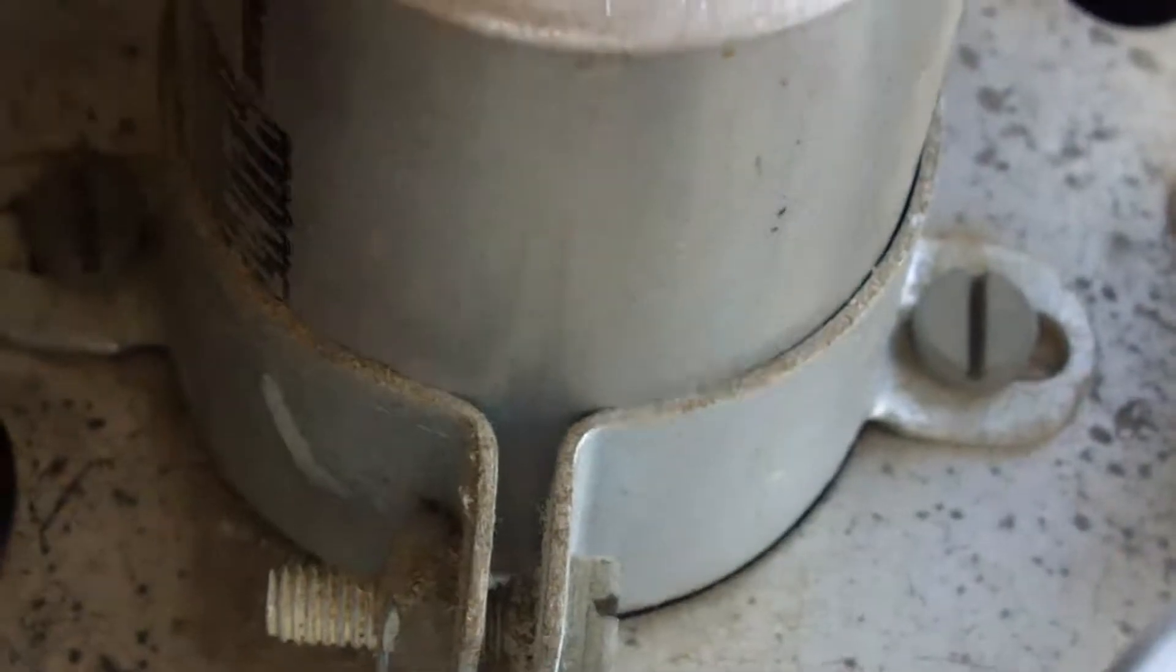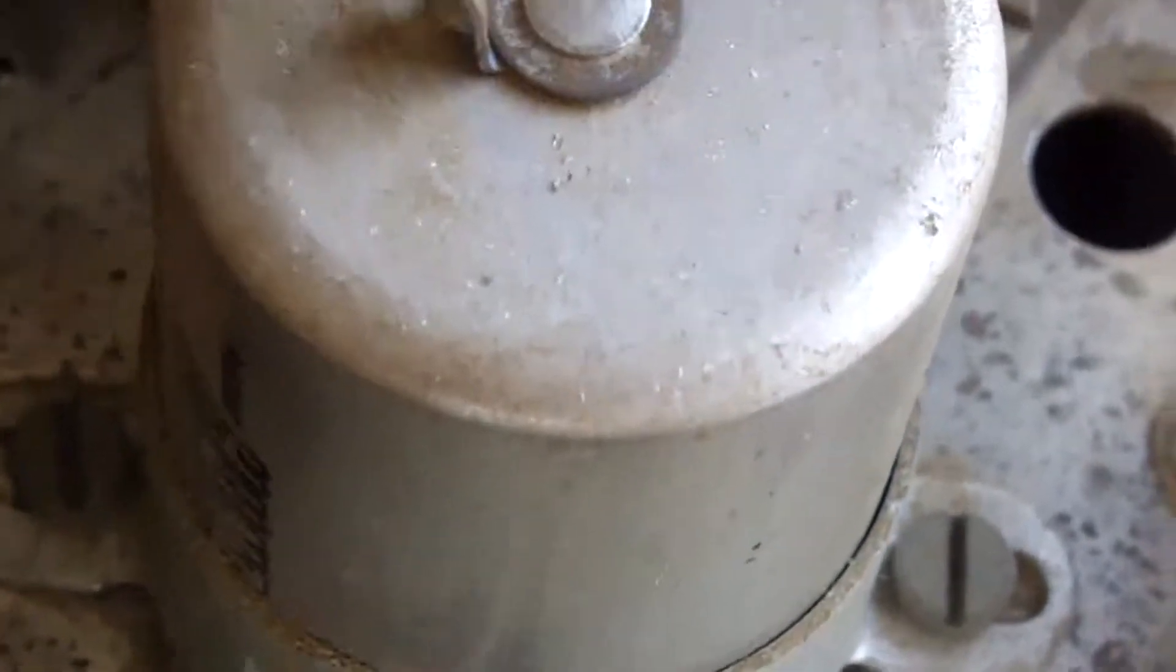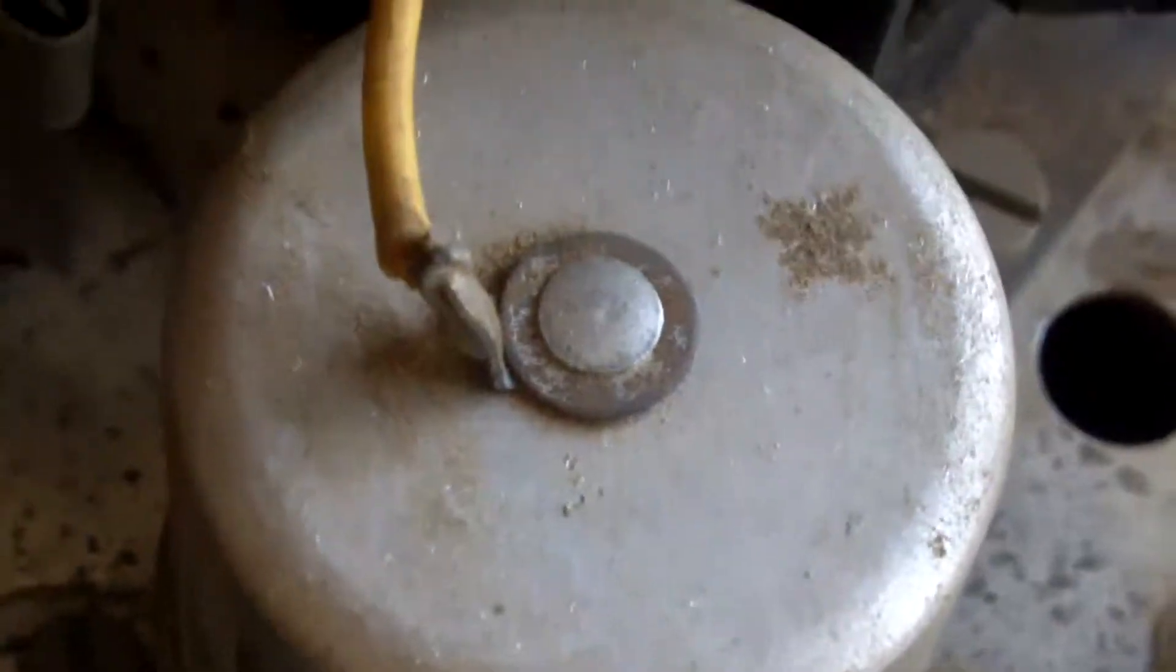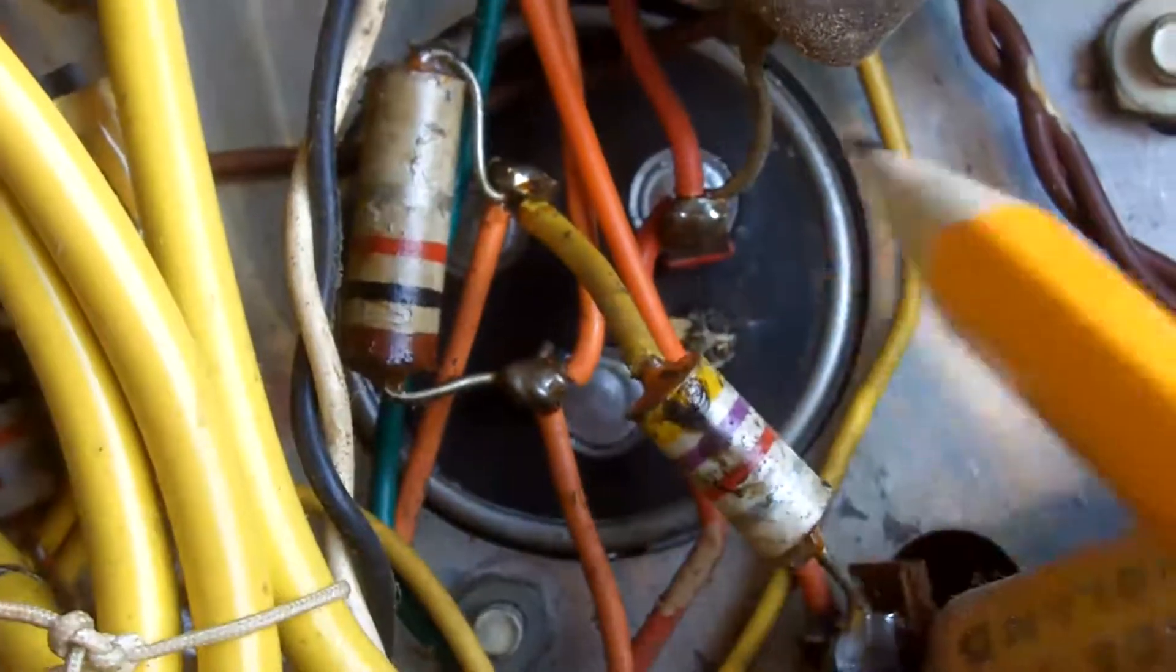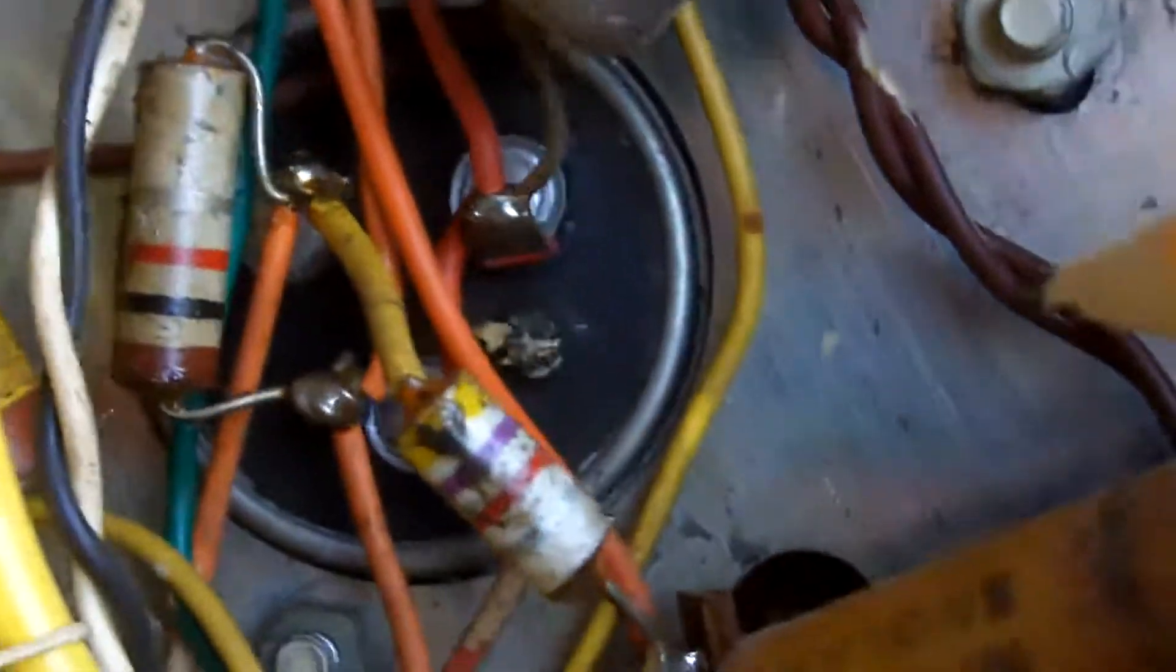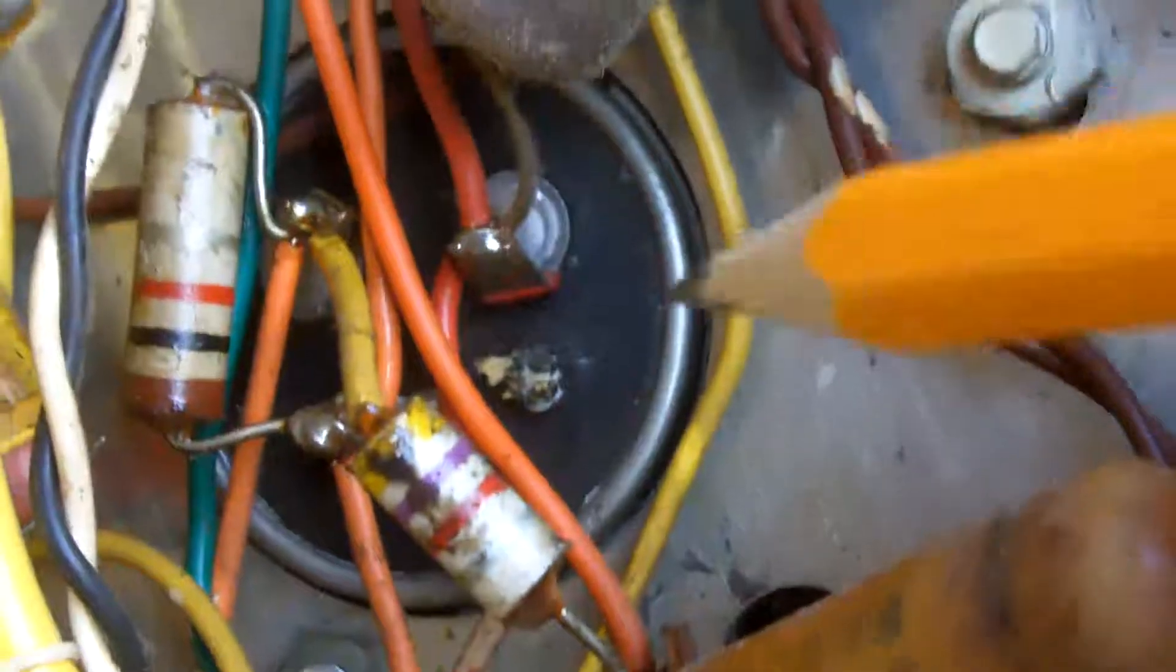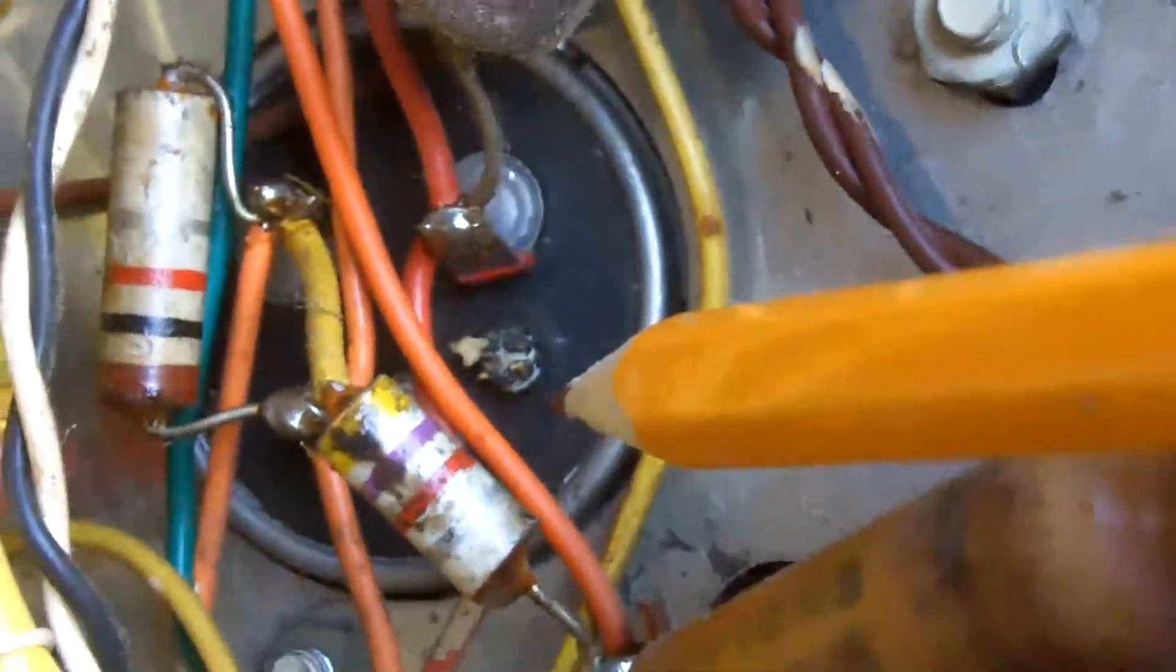This is a top view of the smoothing capacitor that we're talking about and it's situated next to the mains transformer there. I'll show you the underside of this capacitor now. There are 3 terminals, 1, 2, 3. I'll draw your attention to this little blister here.